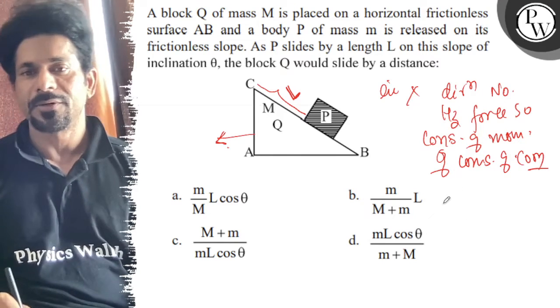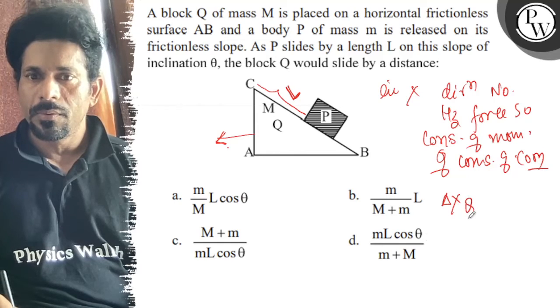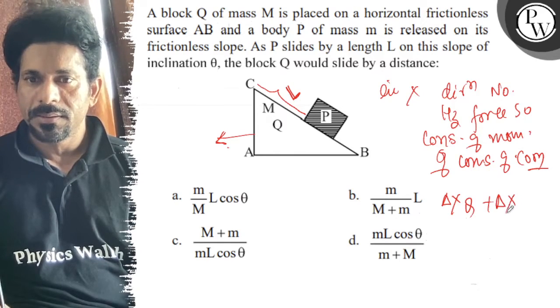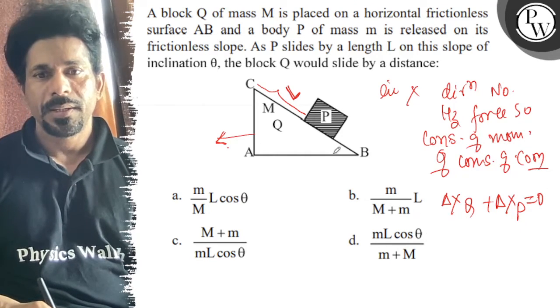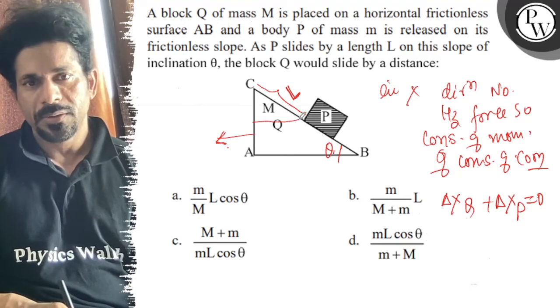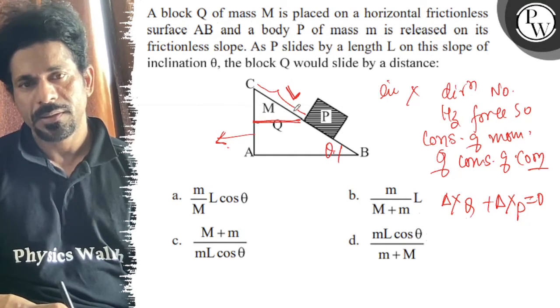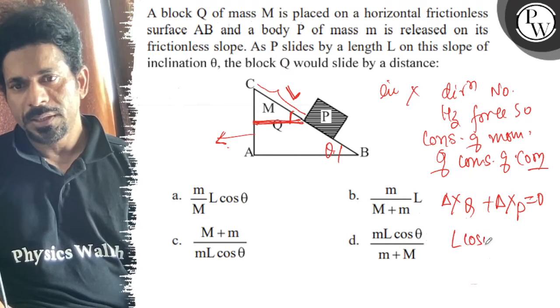The x direction center of mass ka position constant रहेगा, तो del x Q plus del x P in x direction is equal to zero. यह angle आपको theta दिया हुआ है तो अगर यह है तो यह कितना हो जाएगा बच्चो - L cos theta. यह x displacement में देखेंगे तो यह हो गया L cos theta.